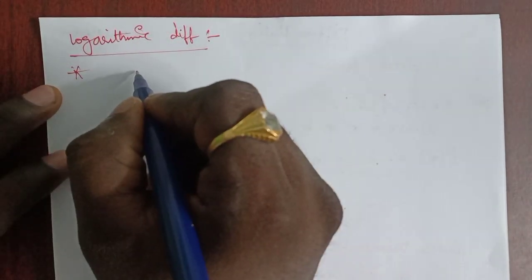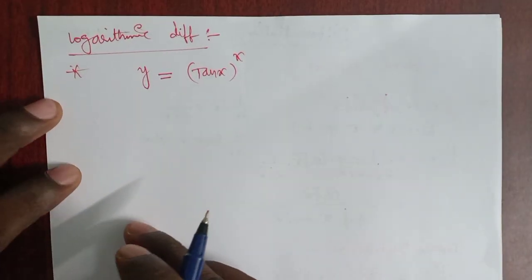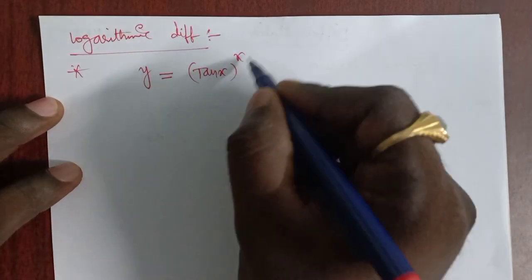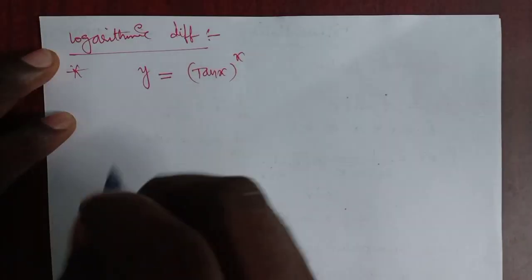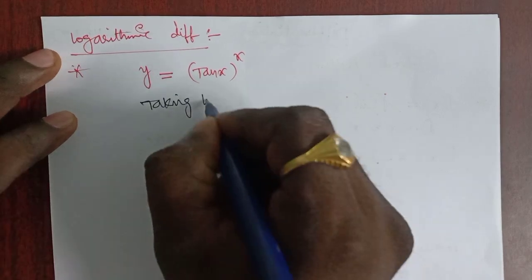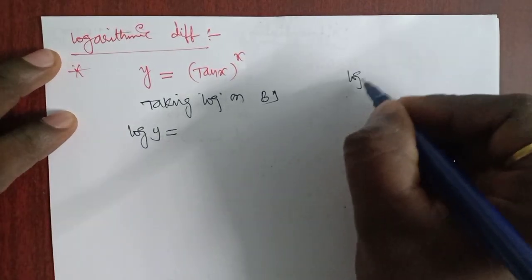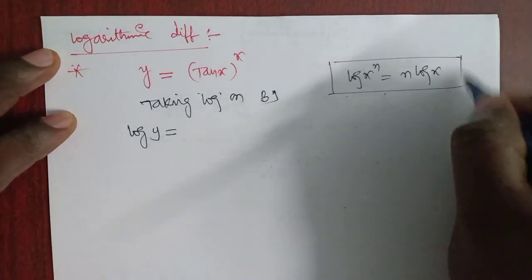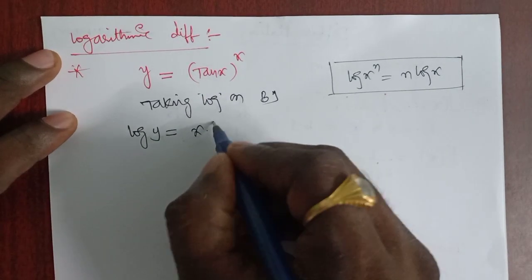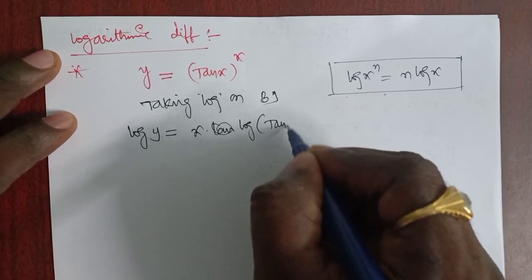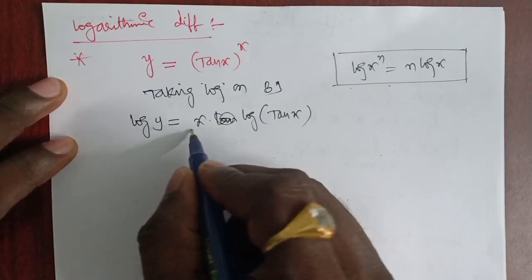Now coming to logarithmic differentiation. Suppose y = (tan x)^x. Here tan x is a variable raised to a variable power. In such cases, we take log on both sides. Using log(x^n) = n·log(x), we get log y = x · log(tan x).